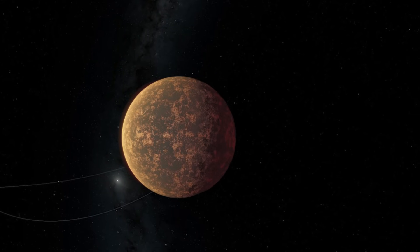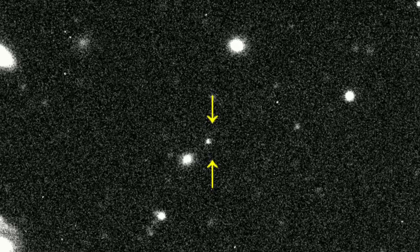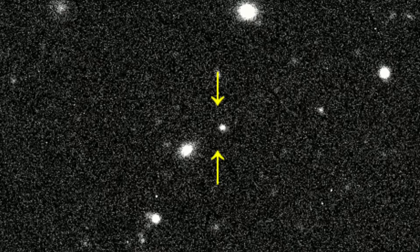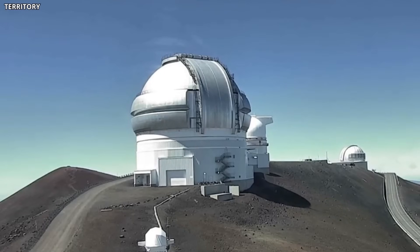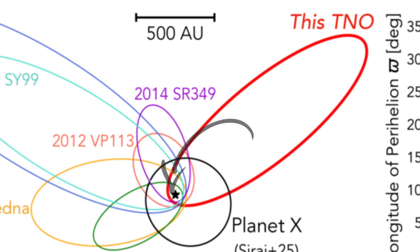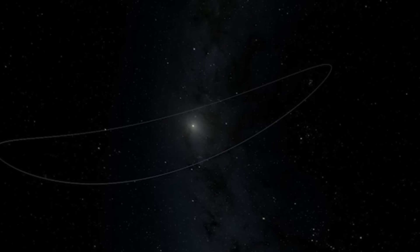One of these newcomers, designated 2017 OF201, appears large enough to qualify as a dwarf planet. It was detected in deep archival surveys spanning years and confirmed through observations by telescopes in Chile and Hawaii. Its orbit is nothing short of extraordinary, from a perihelion of roughly 45 AU, bringing it inwards near Pluto's distance, to an aphelion soaring beyond 1,600 AU, and it completes a full orbit in nearly 25,000 years.